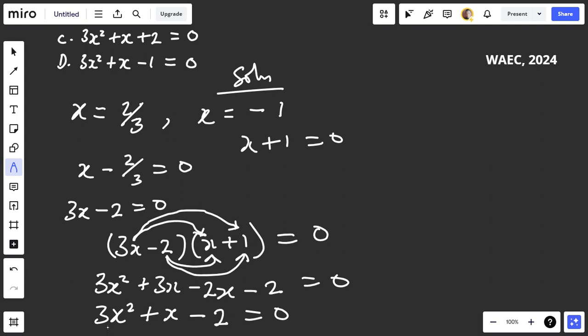The answer is 3x² + x - 2. Which option does that tally? Option A.